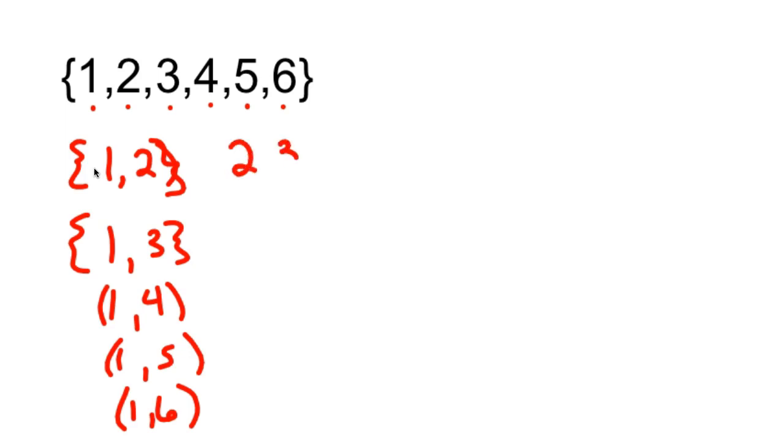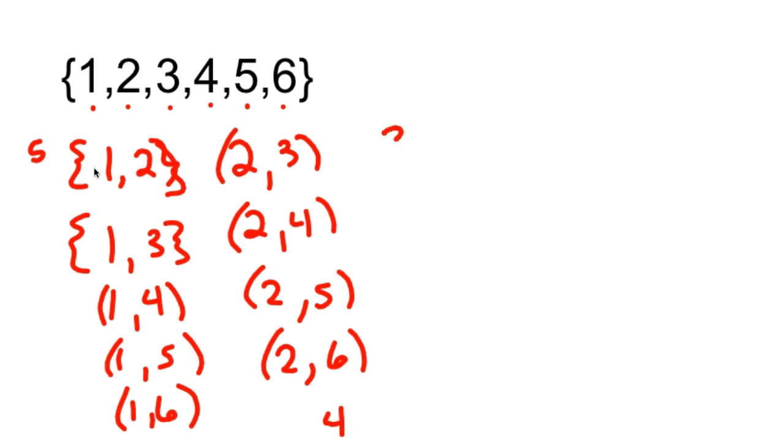Then the set two, three. Two, four. Two, five. And two, six. Okay, and there's your sets of, there's four people. Here are those five people. It's almost like the hexagon. And then three, person three, can go three, four, three, five, and three, six. So there's your three handshakes.